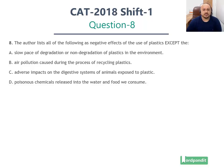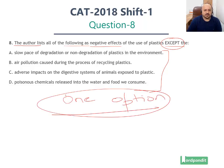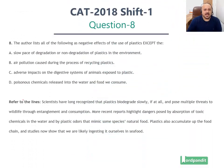Before you go through this question, make sure you solve the passage and you've gone through the passage analysis video for this particular passage. This is a very easy question here. The question states: the author lists all of the following as negative effects of the use of plastics except — so you are given 4 options and you've got to identify the one option that does not fit, the one that is out of place. Let's refer to the specific context; this is a direct fact-based question.